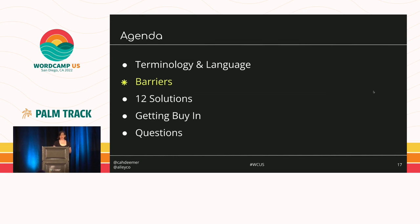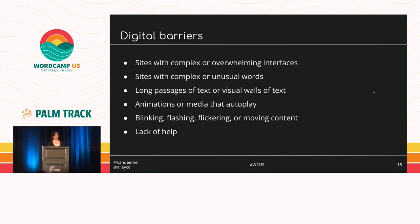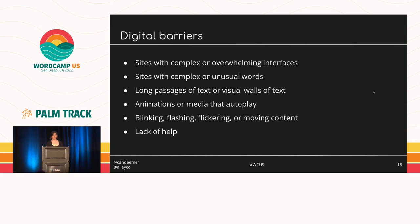So let's dive into the barriers that people with cognitive disabilities face online. Those include sites with complex or overwhelming interfaces, sites with complex or unusual words, long passages of text or visual walls of text, animation or media that auto-plays, blinking, flashing, flickering, or moving content, and sites that don't have help available. Let's take a look at a couple of sites that demonstrate what not to do.